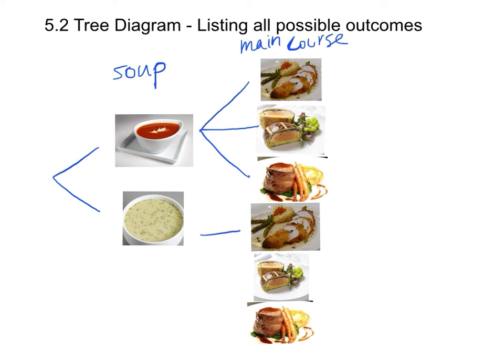Even if we select white soup in the soup item, again we have three different choices in the main course: chicken, fish, or beef.